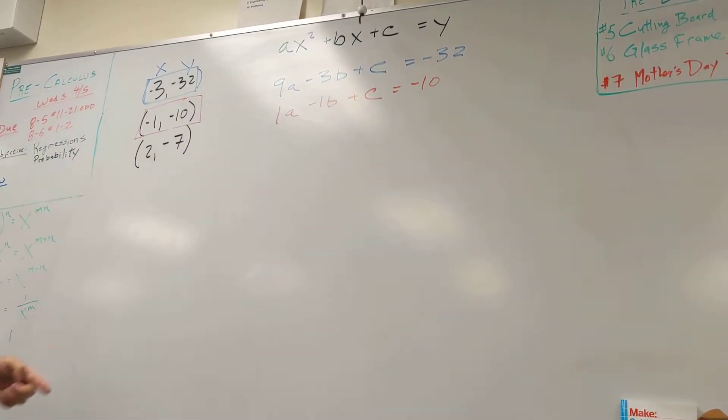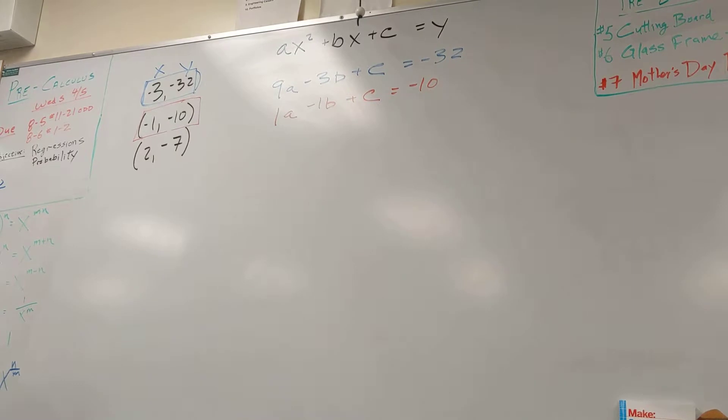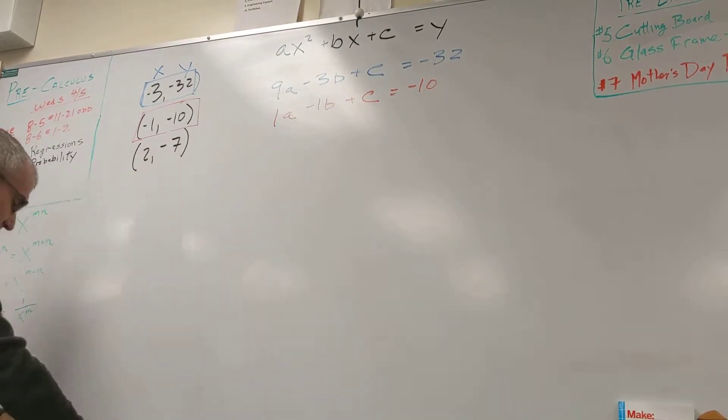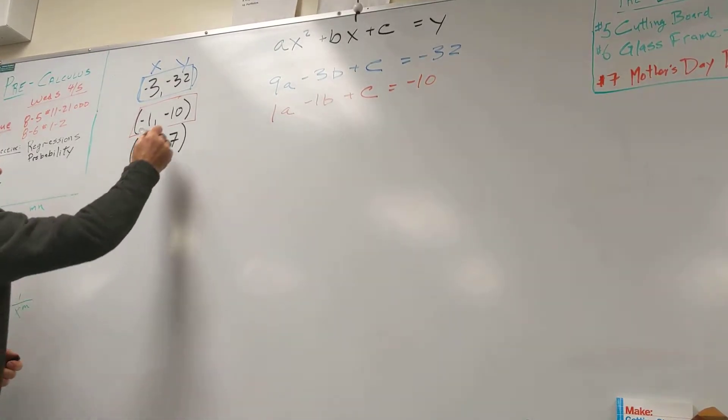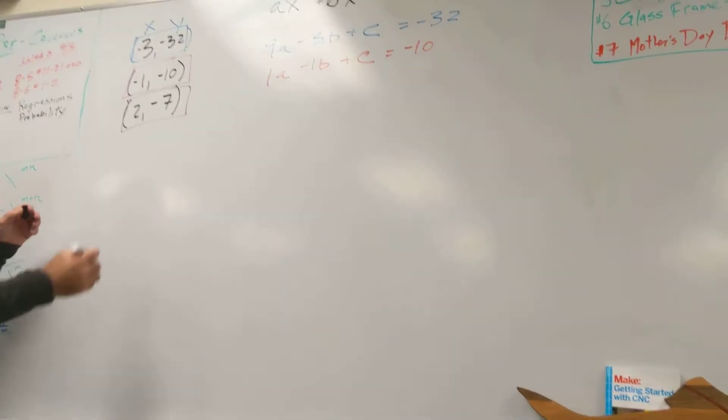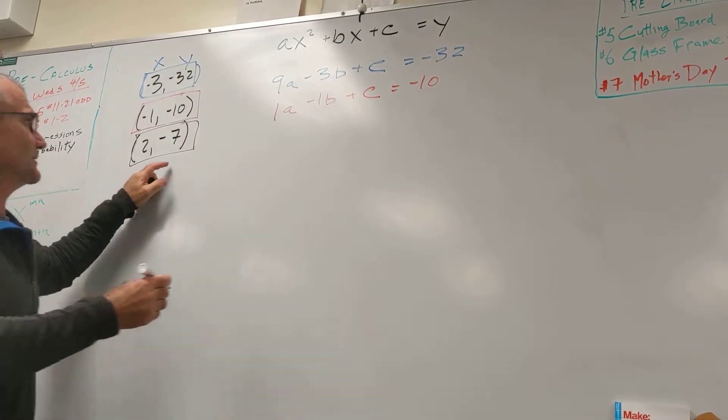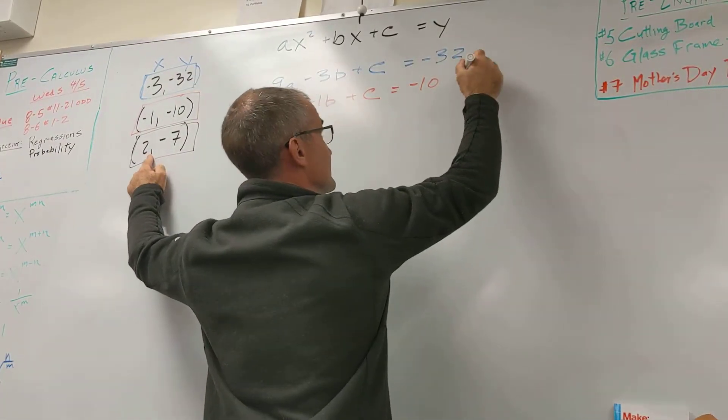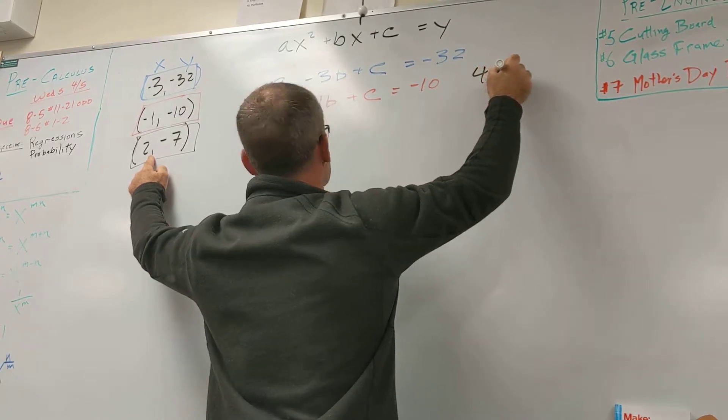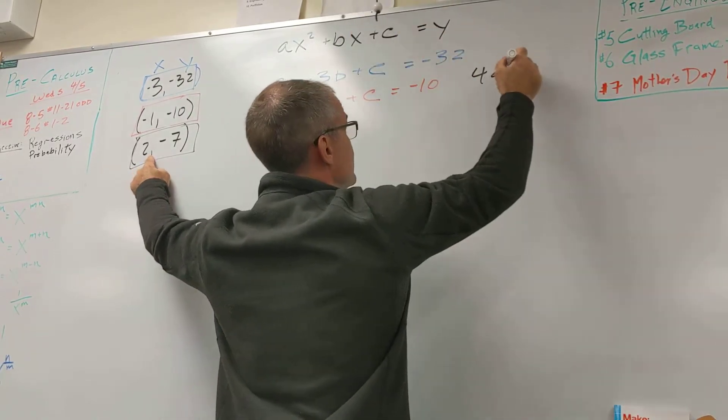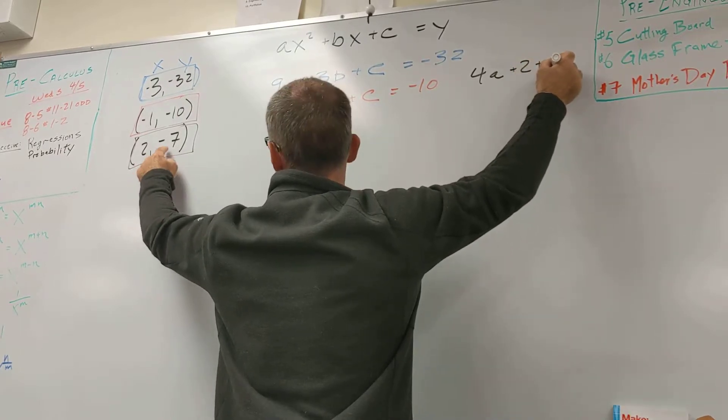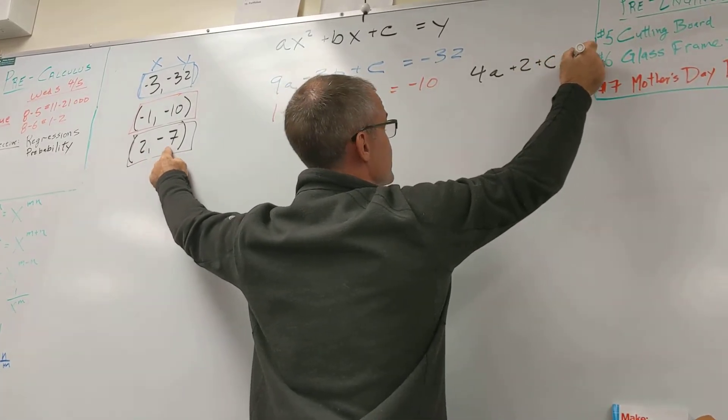And then I'm going to create a third equation with this black point right here. And just like we've done with three equations and three variables, I'm just going to rewrite it over here. I take that 2 and plug it in. You get 4a, a little crowded here, plus 2b plus c equals y, which is negative 7.